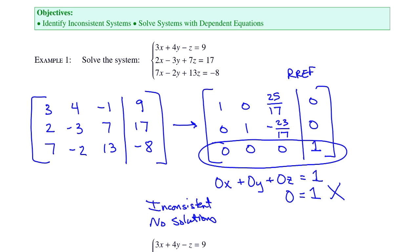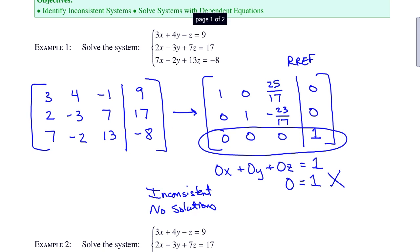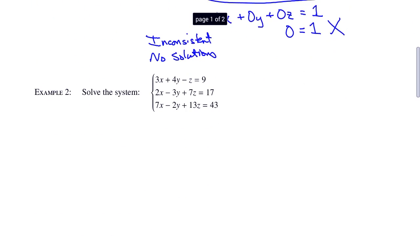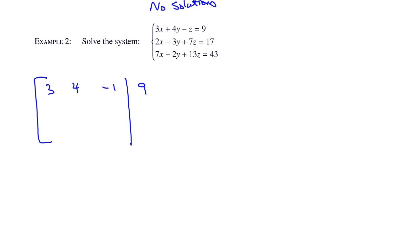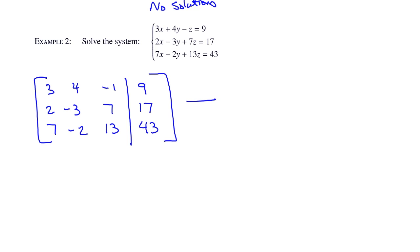Let's look at example 2. It's basically the same system, except now the last equation ends in 43. So let's create the matrix: 3, 4, negative 1, 9; 2, negative 3, 7, 17; 7, negative 2, 13, and 43. Let's perform the reduced row echelon form on this one.